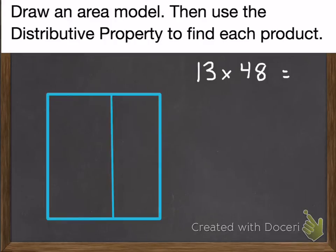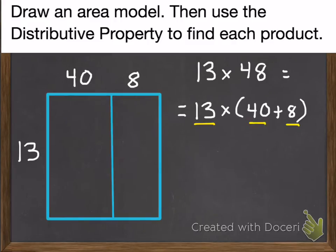So we're going to break apart our greater number of 48. So it's going to be 13 times 40 plus 8. We break that apart. So my 13 goes on the side. The 40 and the 8 go on top of my area model. And then we're going to multiply those. So 13 times the 40, and then 13 times the 8. So we'll start with 13 times 40.